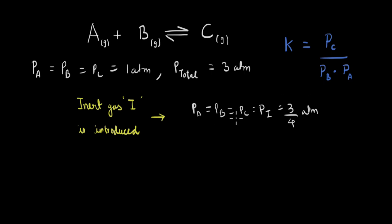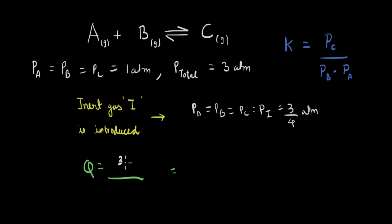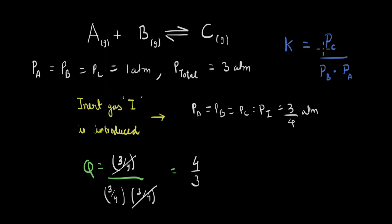We're just making this assumption to make our calculations easier. You can verify it is valid because if you sum up the partial pressures of all four gases, which is 4 times 3/4, the total pressure is still 3 atm. After introducing this inert gas, the partial pressures of A, B, and C have reduced. If we calculate the reaction quotient, it will be equal to the partial pressure of C, which is 3/4, divided by the partial pressure of B, which is 3/4, times the partial pressure of A, which is also 3/4. Cancelling, the reaction quotient after introduction of an inert gas is 4/3.